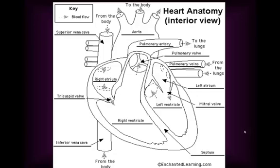Here's the path in words: Blood enters through the superior and inferior vena cava, into the right atrium, through the tricuspid valve, into the right ventricle, through the pulmonary valve, into the pulmonary artery, to the lungs.